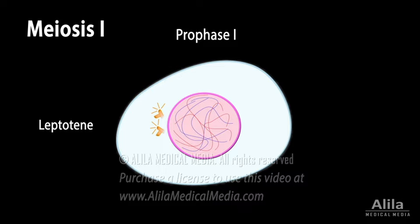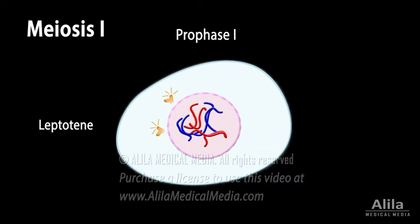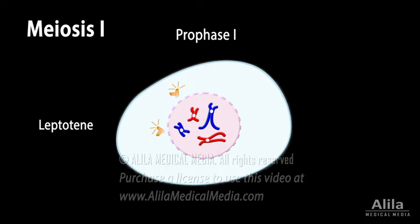In prophase 1, the complex of DNA and protein — the chromatin — condenses to form visible chromosomes. At this point, the DNA has already been replicated. The resulting identical chromosomes are called sister chromatids, and they remain connected at a centromere.